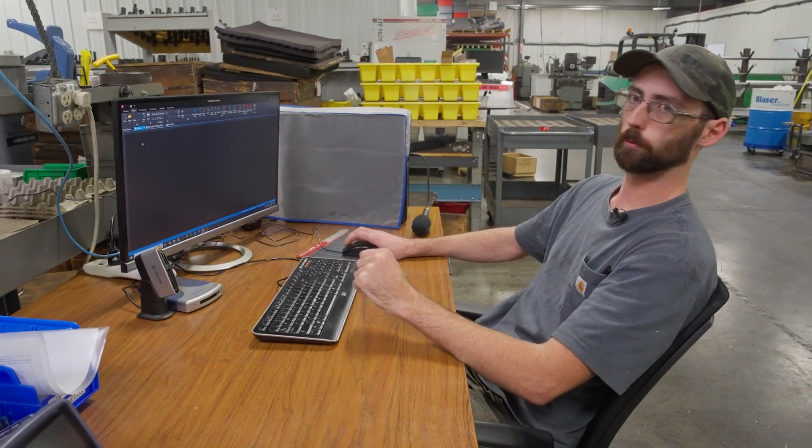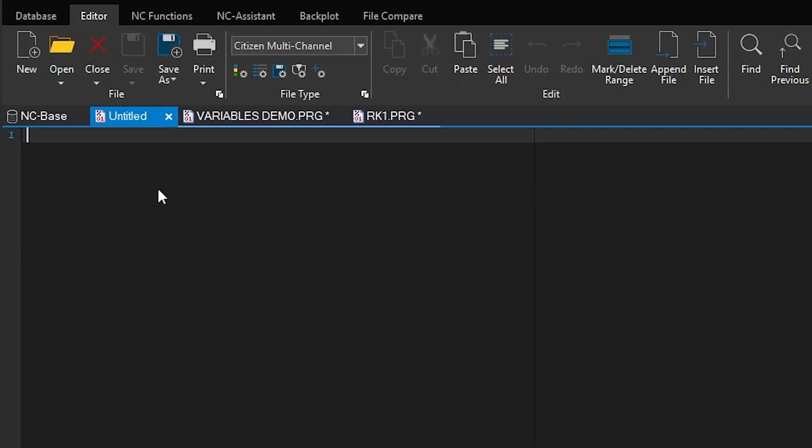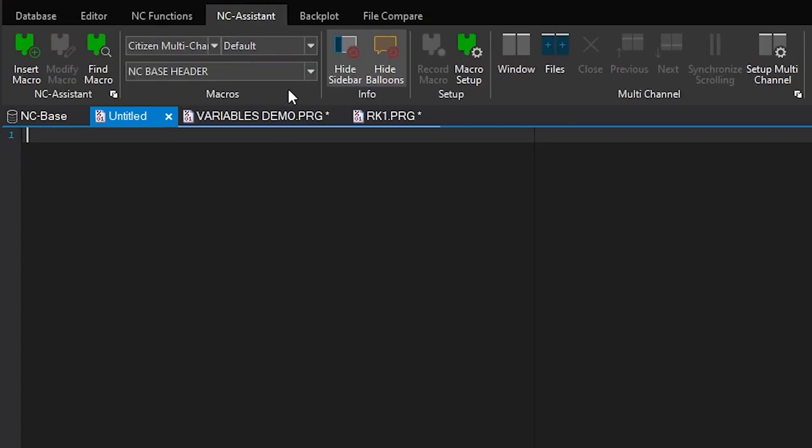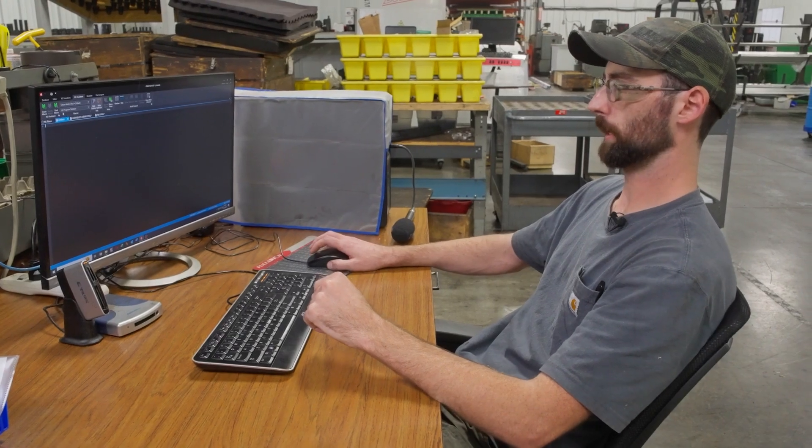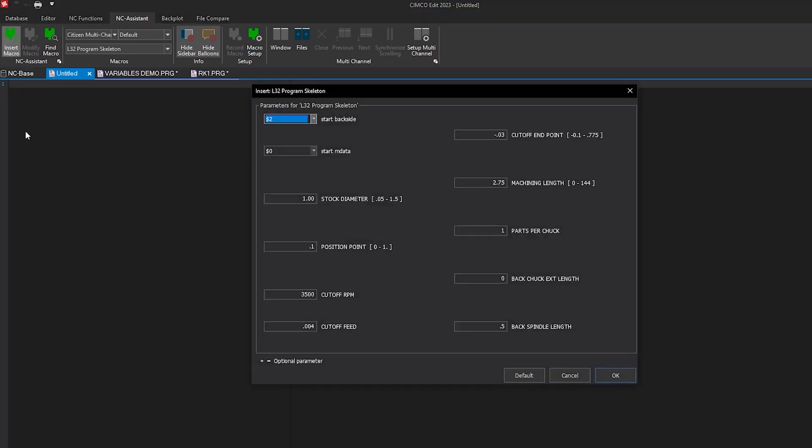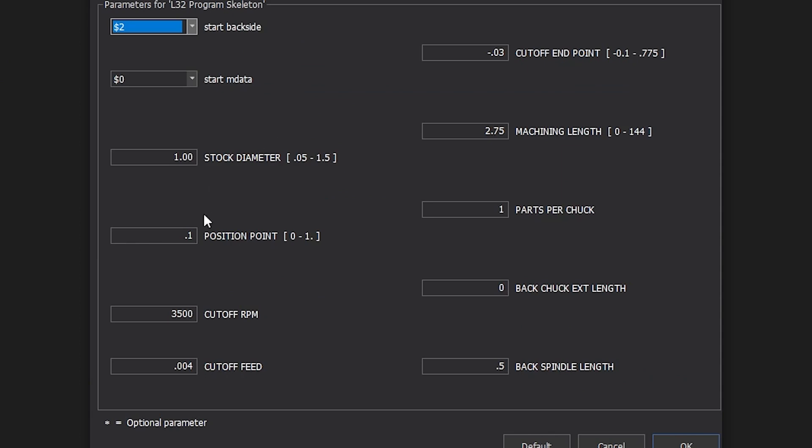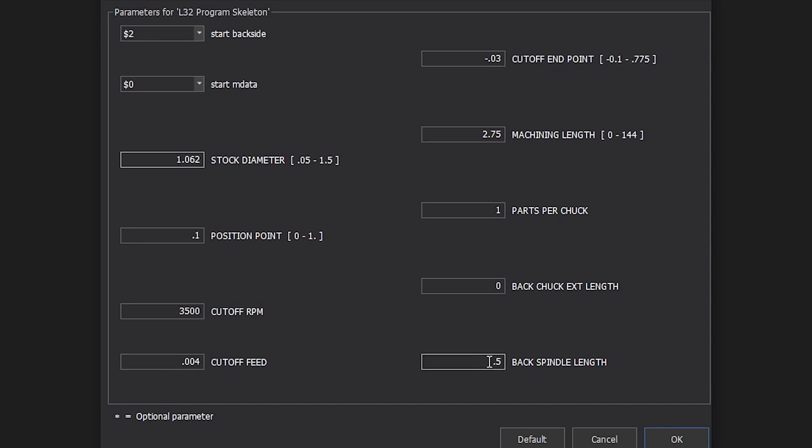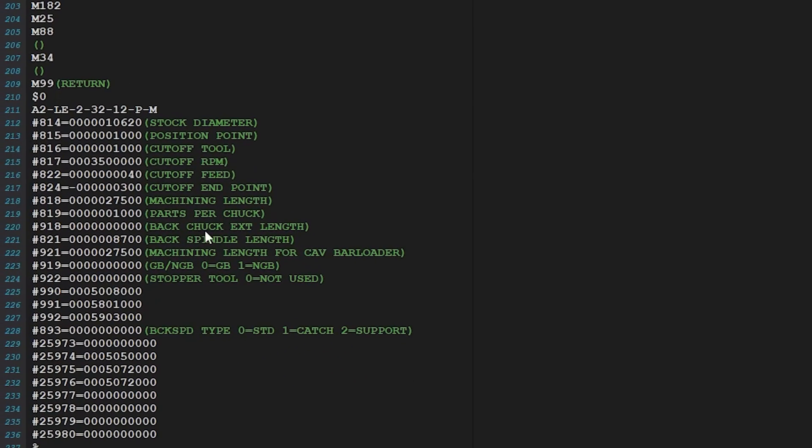It gets better because Simcoe allows you to write your own macros. I have written a macro to auto-generate a program skeleton for an L32 using variables. This is where you define all your values in your MC data page. We'll say we're running 1.0625 inch stock, position point 100 thousandths. We're going to run an extra long extended pickoff. Here we go - notate everything.